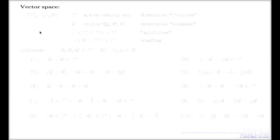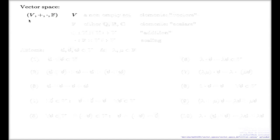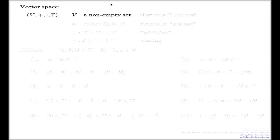Mathematicians look at those objects and they single out the following properties — every time you deal with these objects you're sort of dealing with a quadruple of this type, where V stands for some non-empty set. If it is n-tuples it's a set of n-tuples, if it is polynomials it's a set of polynomials, if it is functions it's a set of functions. The elements of this set we're going to call vectors, even though many of them have nothing to do with vectors whatsoever — like matrices, for instance, they're not vectors at all.